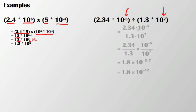So the first thing I do is set up my problem. I have 2.34 times 10 to the negative fifth divided by 1.3 times 10 to the negative second. Now I'm going to break these down separately. I have 2.34 divided by 1.3 times 10 to the negative fifth divided by 10 to the negative second.